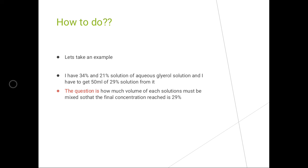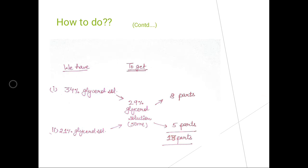To perform the allegation, just take care of what you have and what you want to get from it. In this example, we have a 34% glycerol solution and a 21% glycerol solution, and we need to get a 29% glycerol solution of 50 ml. We shall calculate the proportion in which these two solutions should be mixed. Place the different mixtures on the left-hand side, and what you want to get in the center.